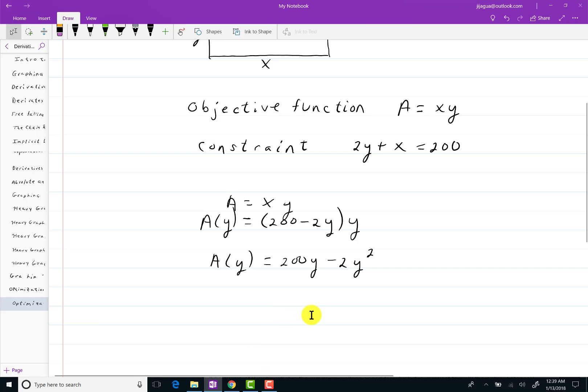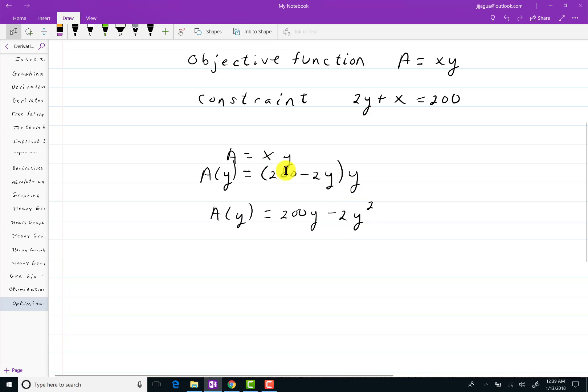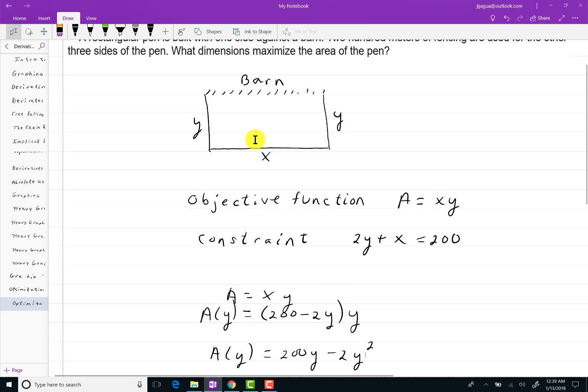Now you should also, in the constraint, in the world of constraints, we should list what y is allowed to be equal to here. So I want you to think about this. Y could be as little as zero. If y is zero, then you just have this fencing along the barn that is 200 meters long. But theoretically, y could be zero. So let me throw this in here. Zero is less than or equal to y. But then on the other hand, y cannot be bigger than 100. Because if y is 100, then y + y is 200. That would leave x being zero. So the most y can possibly be is 100.